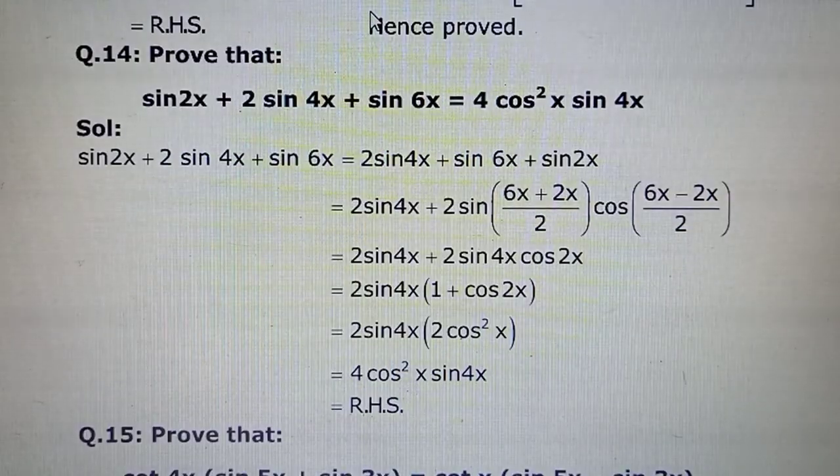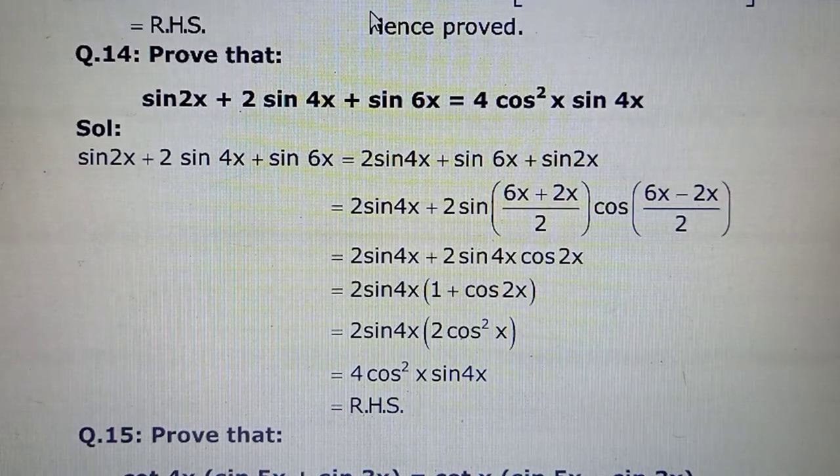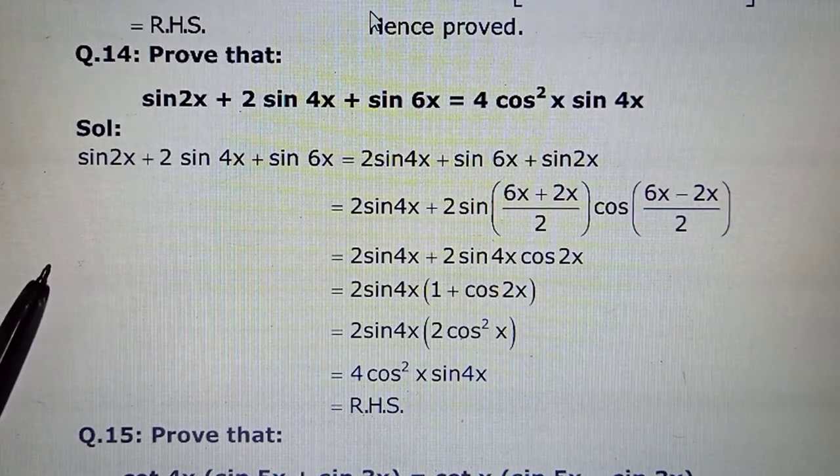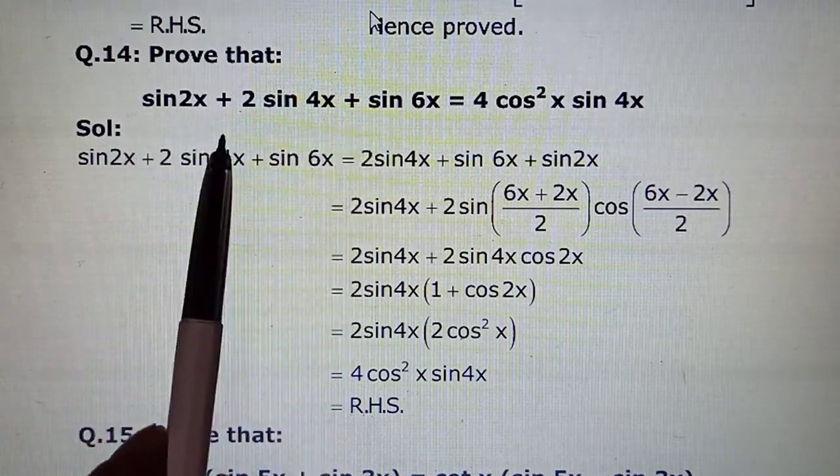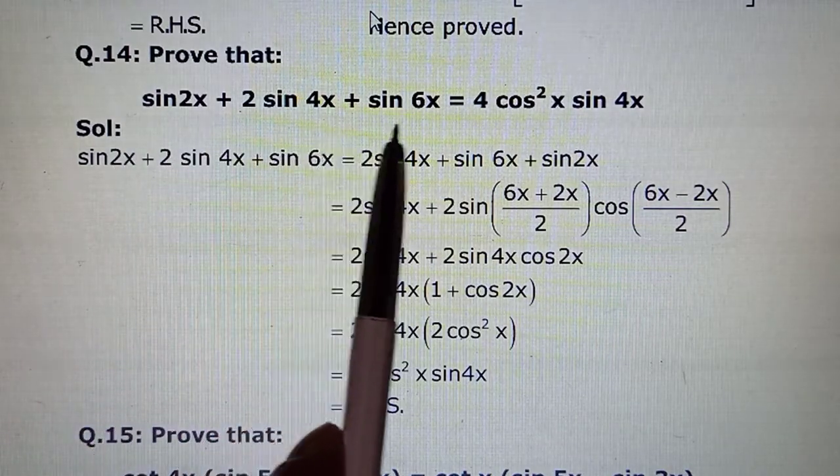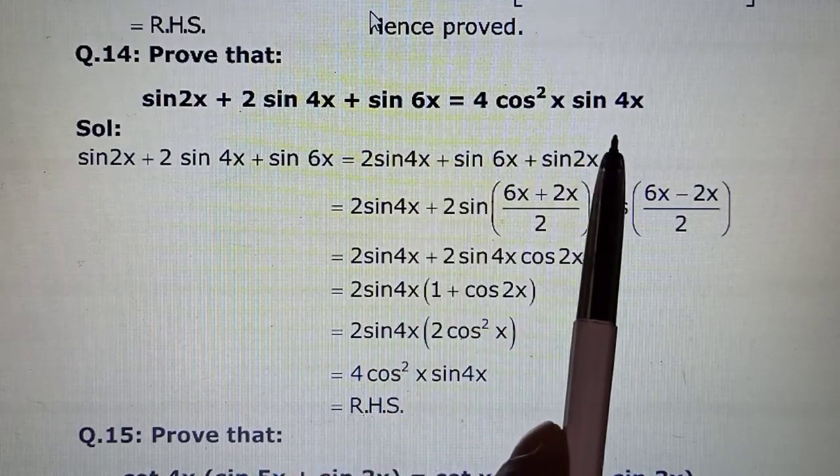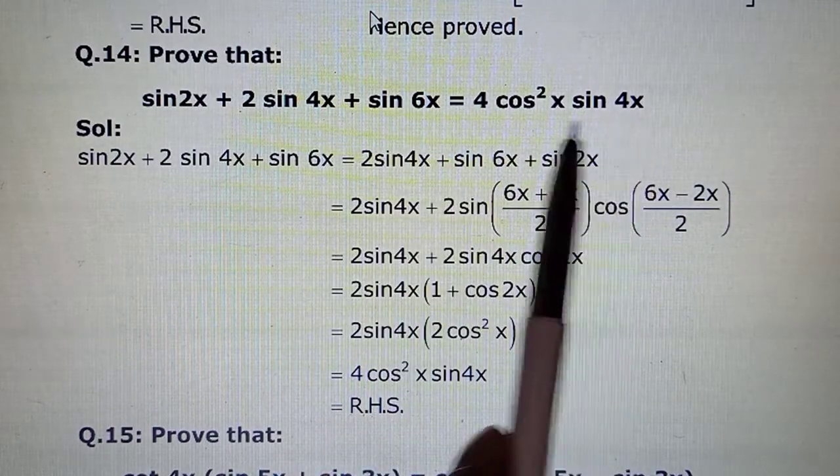Next in the 14th one, now a little bit rearranging is required. You have to keep what you have to prove in mind and then that's not a problem. Your left hand side expression, if you see, has 2x, then it has sin 4x, and then it has sin 6x. And here you see sin 4x, this sin 4x was already here.